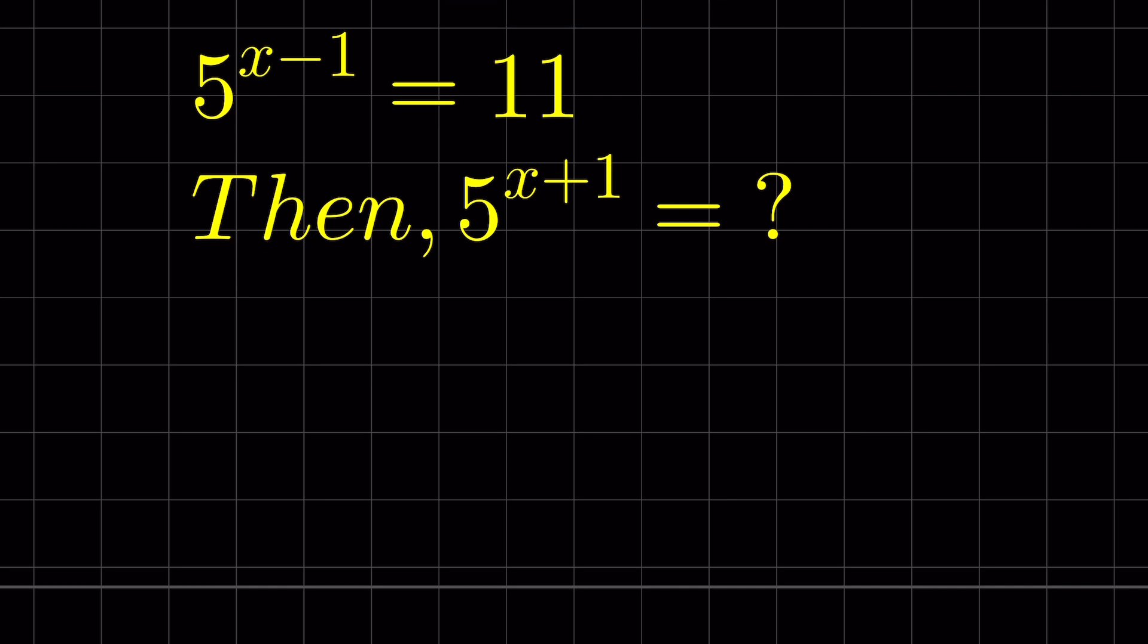There is an identity where a raised to the power m minus n is equal to a raised to the power m upon a raised to the power n.